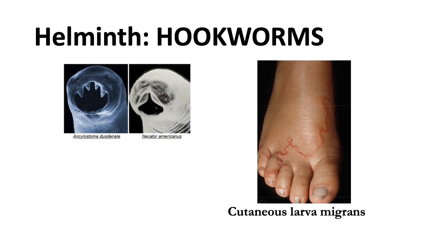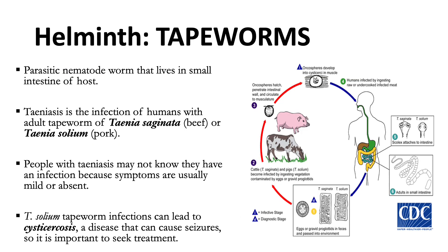This is how hookworms appear under the electron microscope, and this is an example of cutaneous larva migrans. The next helminths are tapeworms, parasitic worms that live in the small intestine of hosts. Taeniasis is the infection of humans with adult tapeworm of Taenia saginata or Taenia solium. People with taeniasis usually have mild or absent symptoms. Taenia solium tapeworm infection can lead to cysticercosis, a disease that can cause seizures, so it is important to seek treatment.